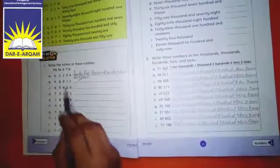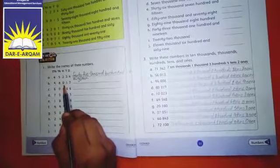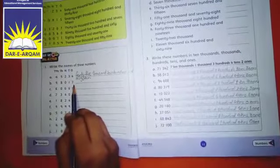Next one is ninety eight thousand. The hundred position is empty, fifty and seventeen. We write seventeen. Got it?